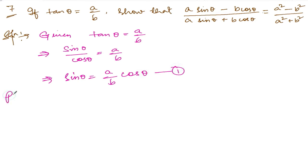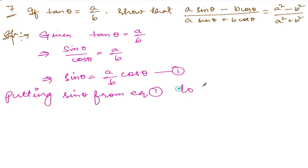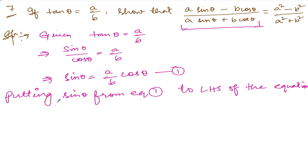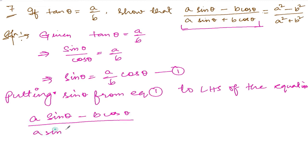Putting sin θ from equation number one into the left hand side of the equation. The left hand side expression is: a sin θ minus b cos θ, divided by a sin θ plus b cos θ.